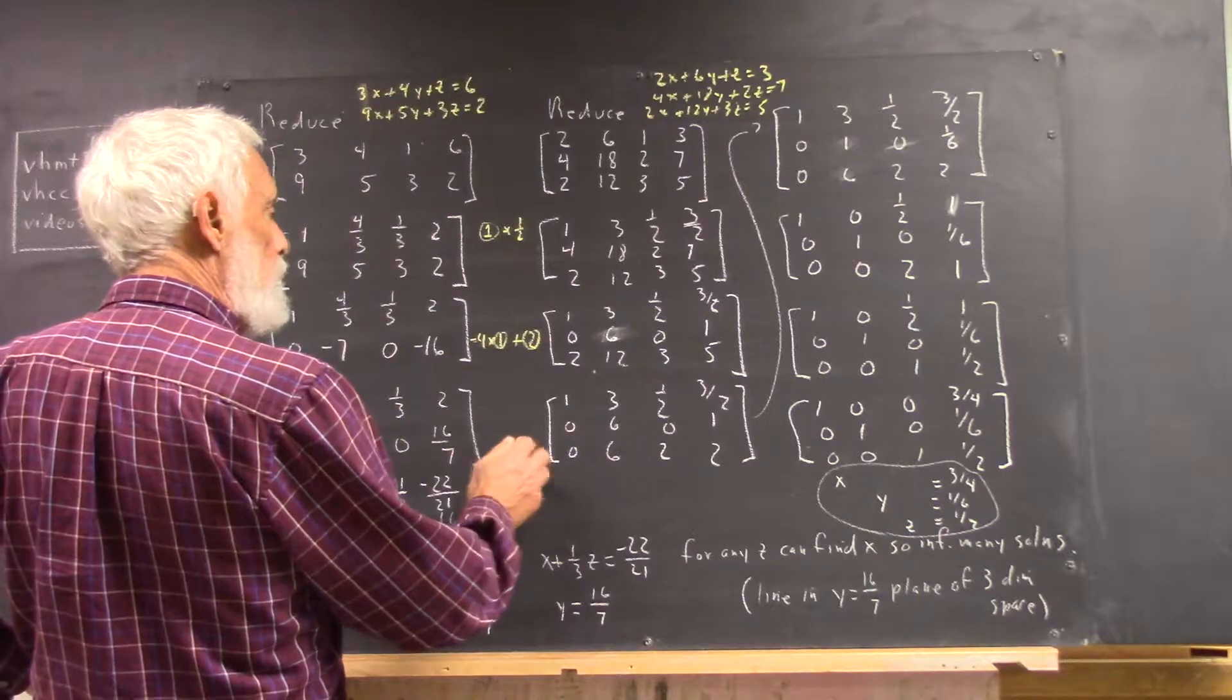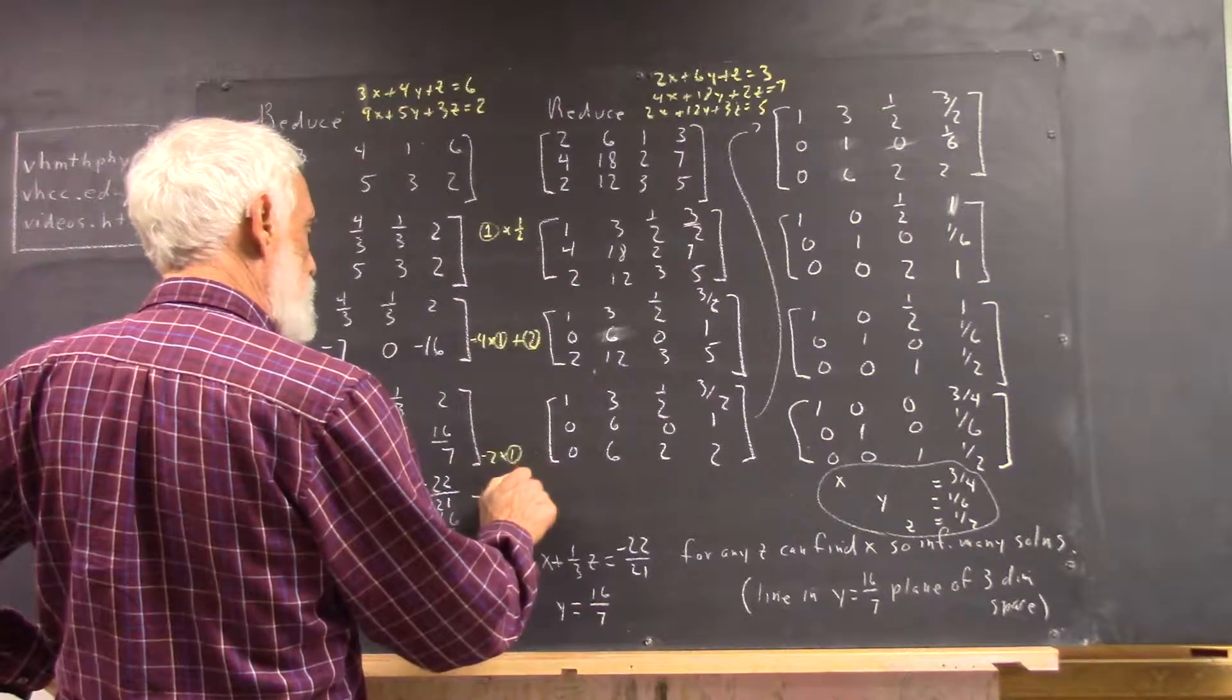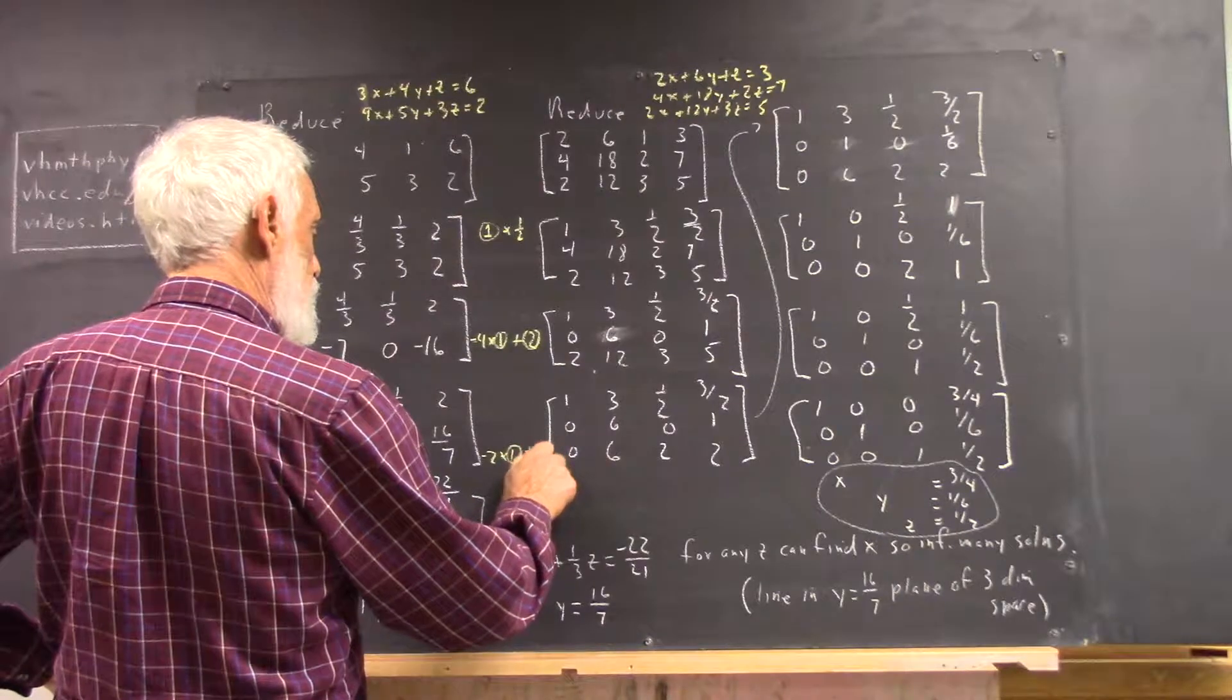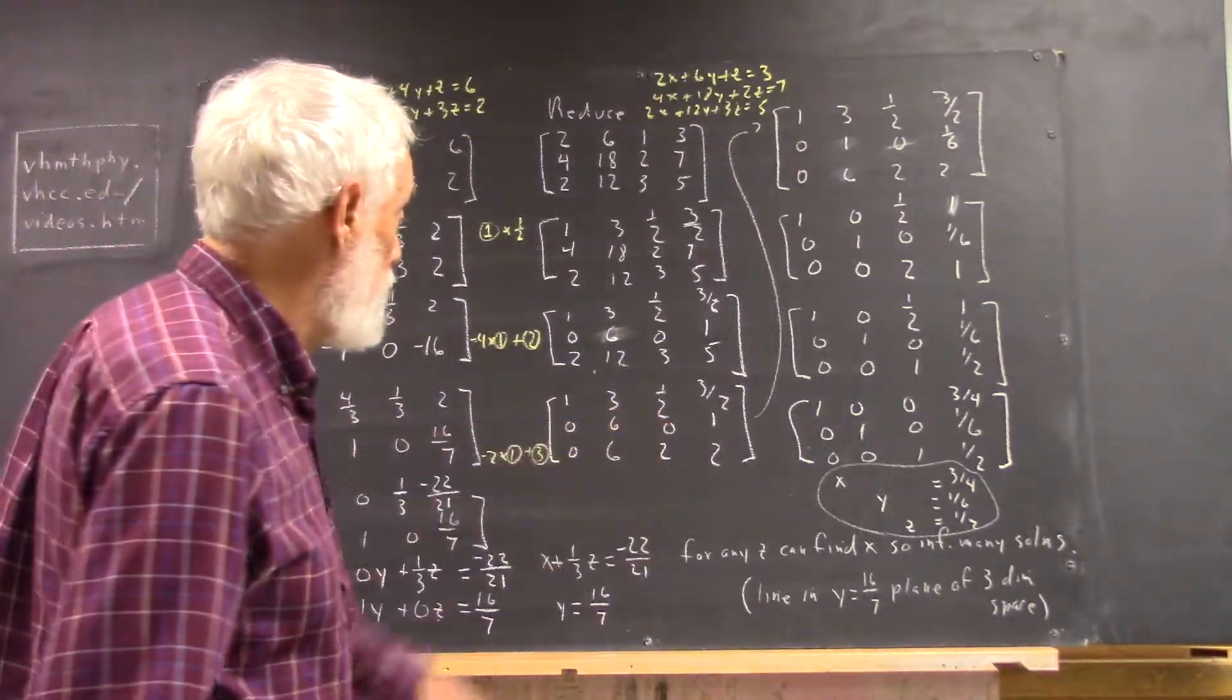So we do what? Negative 2 times the first plus the third. And we get this.